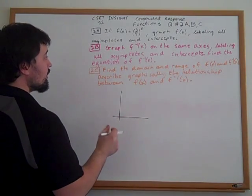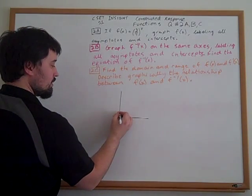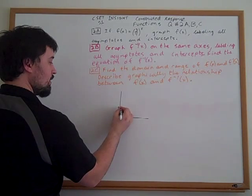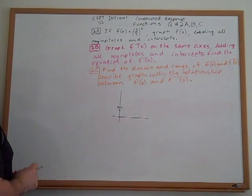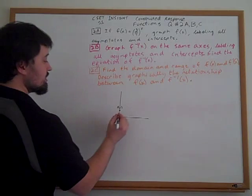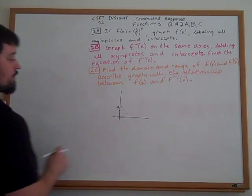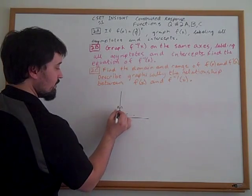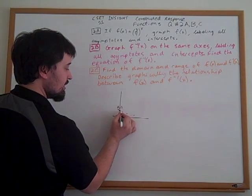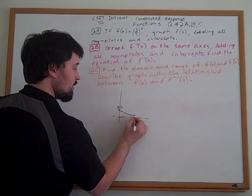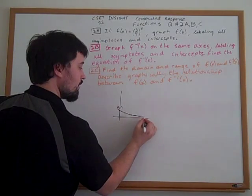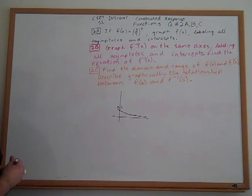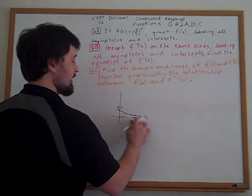So we know that 3 fourths to the 0 power is 1, so it's going to have a y-intercept there of 1. 3 fourths to the 1 is 3 fourths. 3 fourths squared is 9 over 16. And what we see is it's getting smaller and tapering off because of the asymptote idea occurring at y equals 0.